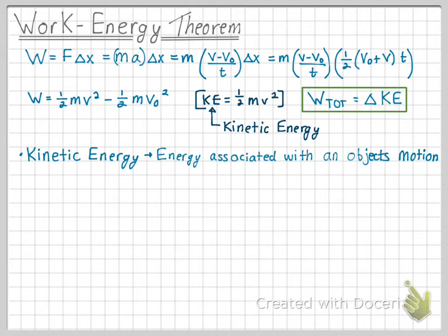An object's kinetic energy depends on its mass and velocity. Objects with higher mass or higher velocity would have a greater kinetic energy compared to those objects with less mass and slower or lower velocities.